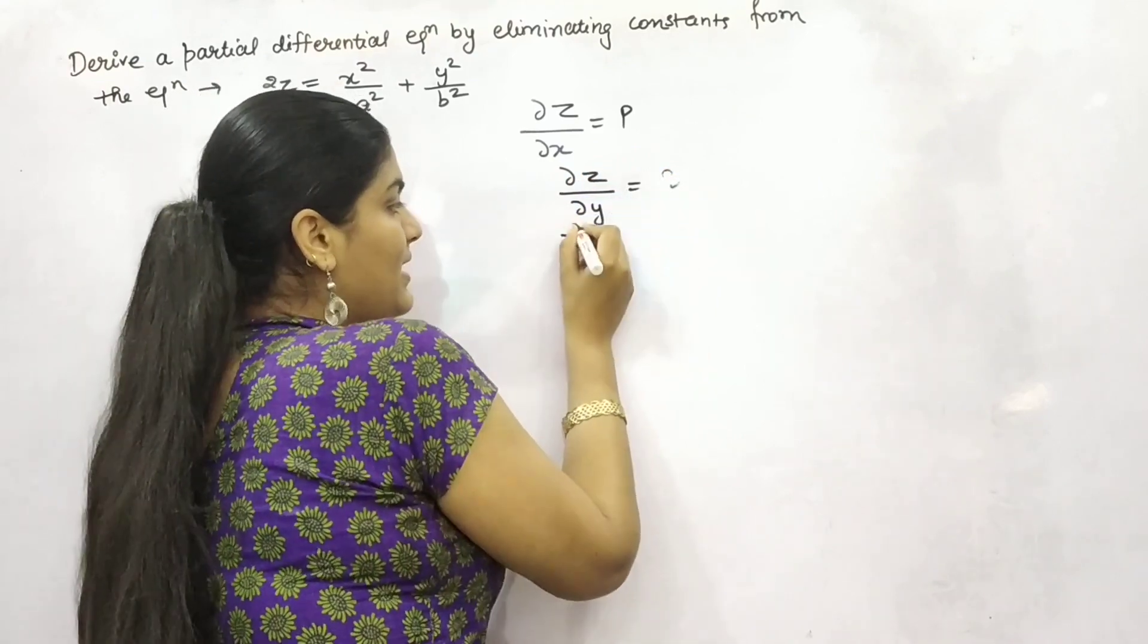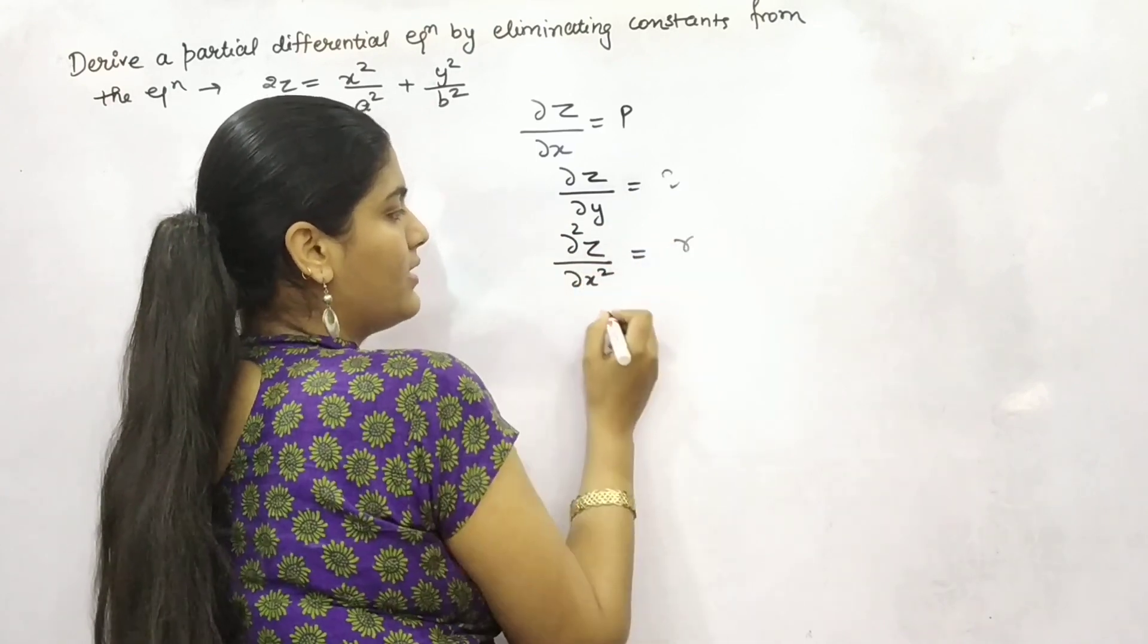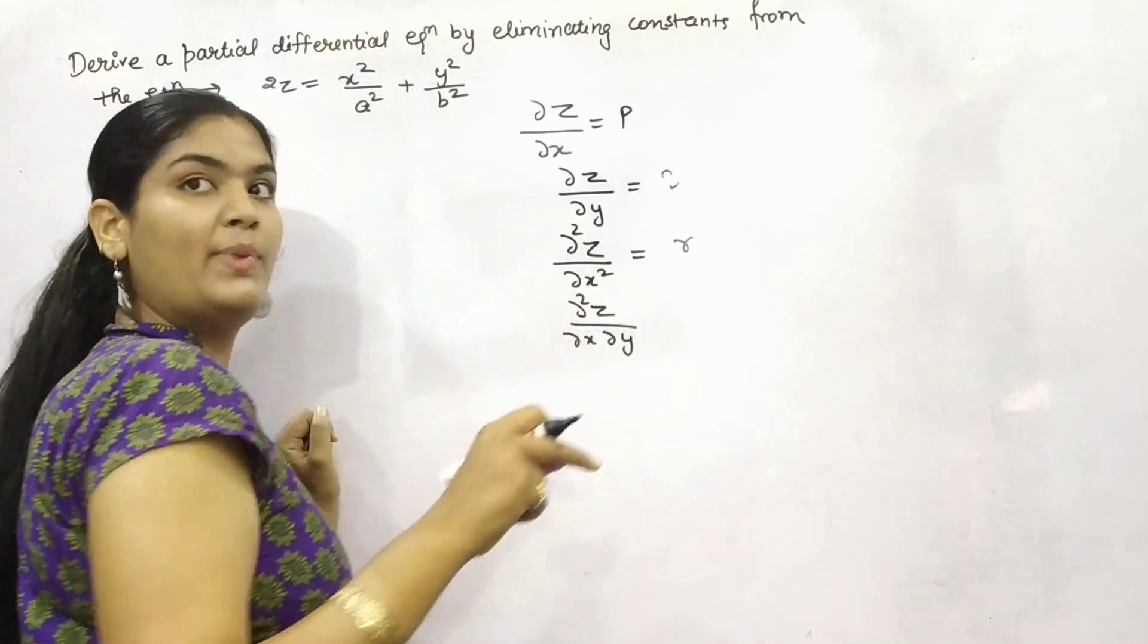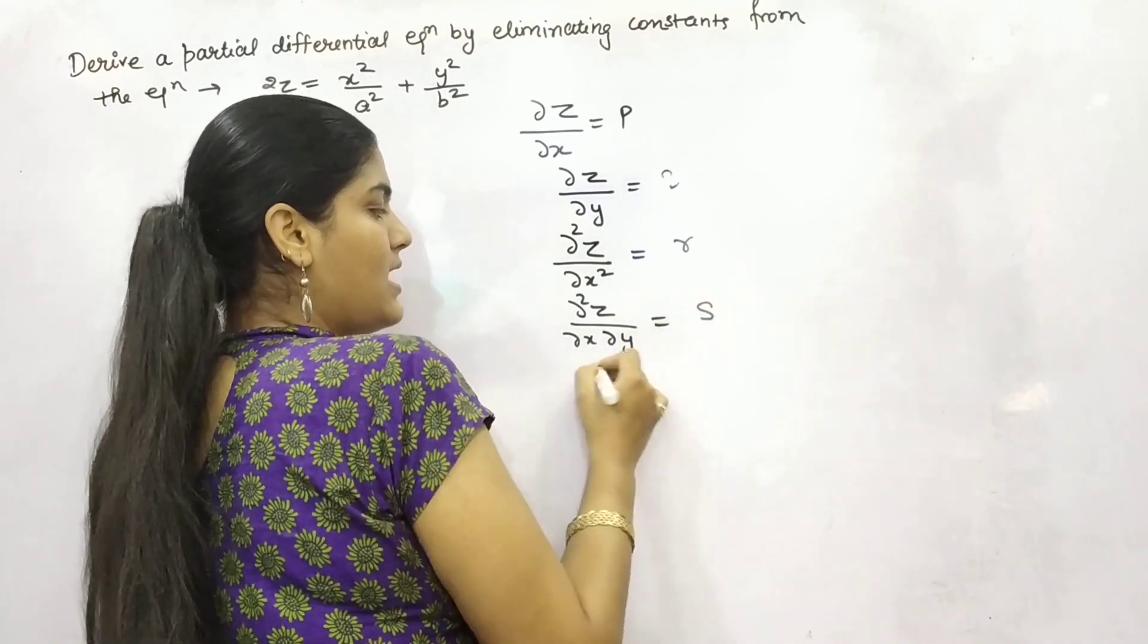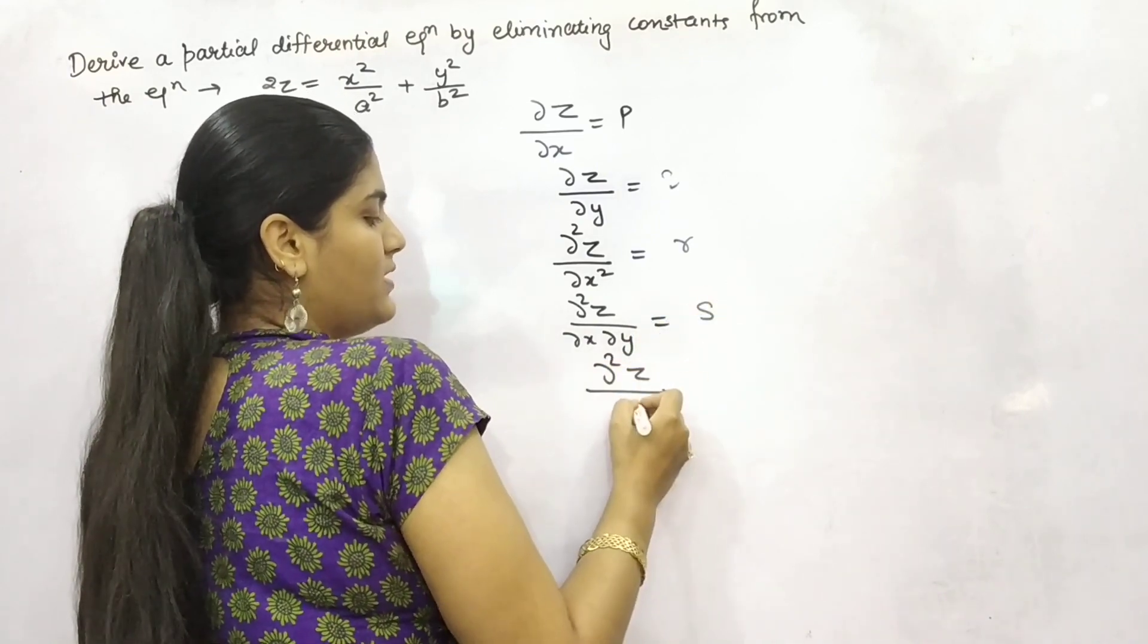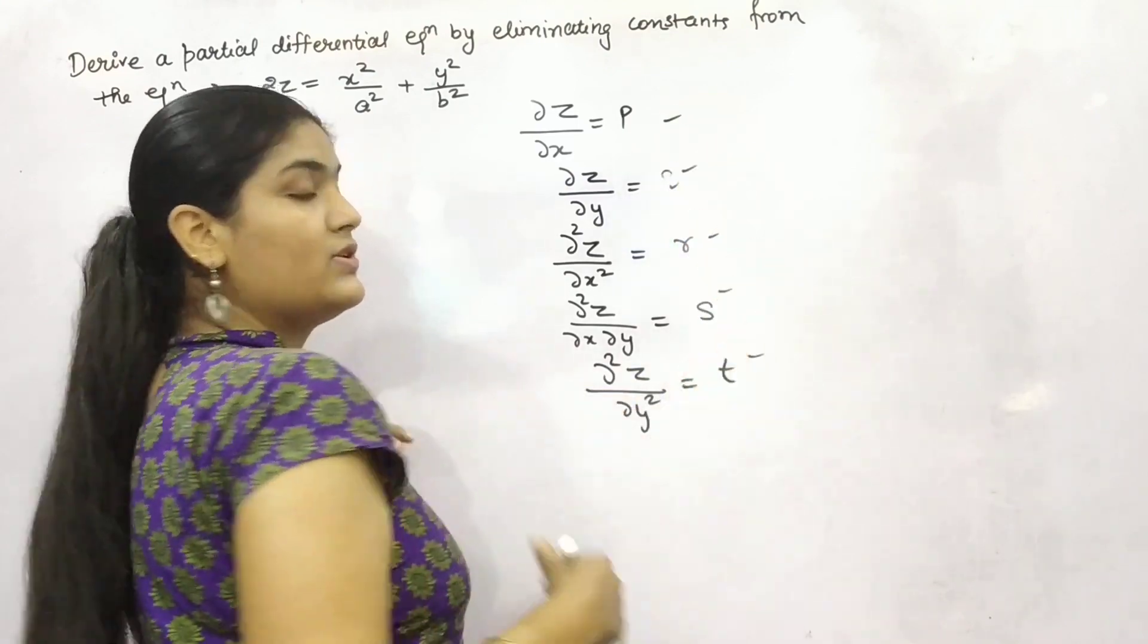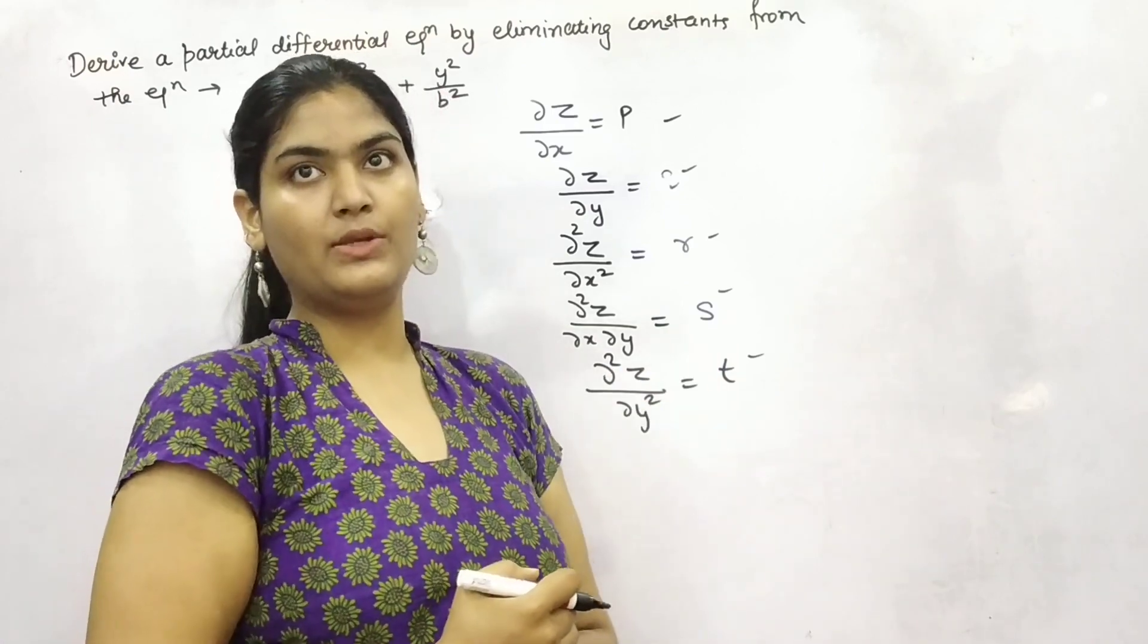Partial double differentiation with respect to x is your r. And if you are doing double differentiation with respect to y and with respect to x it is s. And double differentiation with respect to y is t. So these are some notations which you need to remember so as to easily evaluate or simplify a particular equation.